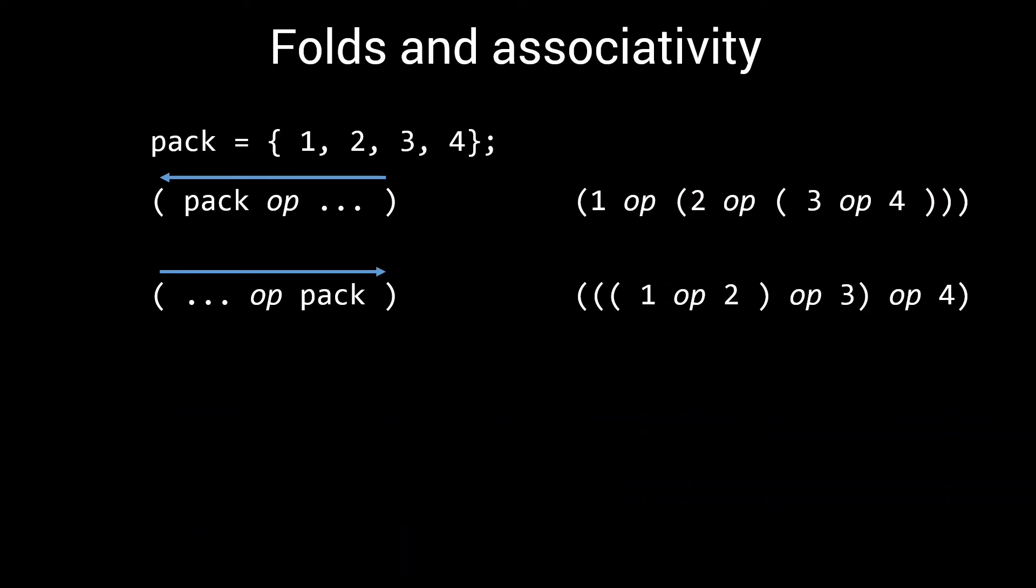And the same holds true for binary folds. If your parameter pack is on the left, you have a right fold, and the other way around. Again, the operators are applied towards the side of the parameter pack.